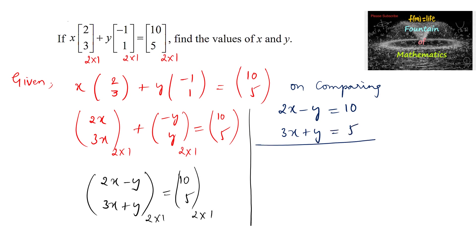Adding the two equations: 2x + 3x = 5x, and −y + y cancels out, giving 5x = 10 + 5 = 15. Therefore x = 15/5 = 3.